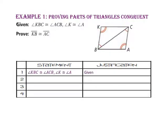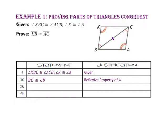Next, we know that side BC is congruent to side CB by the reflexive property of congruence. Since we have two angles and a non-included side that are congruent to corresponding congruent angles and a non-included side of both triangles, we know that triangle KBC is congruent to triangle ACB by the angle-angle-side theorem.